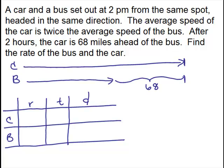So what do we know? Do we know their rates? It says the average speed of the car is twice the average of the speed of the bus. We don't know either rate. But we do know that the car is going faster. So how about we let the bus's rate be x, then the car going twice as fast would be 2x.